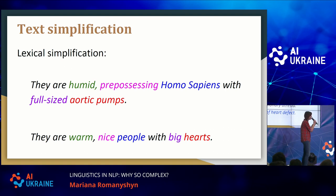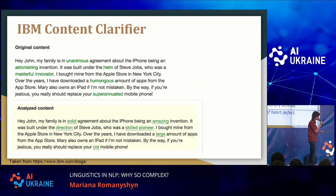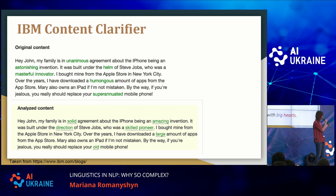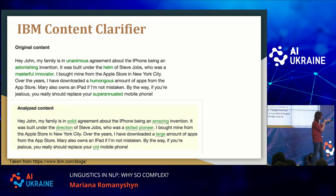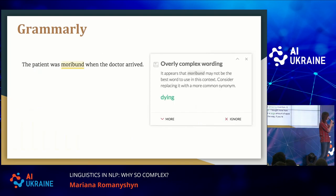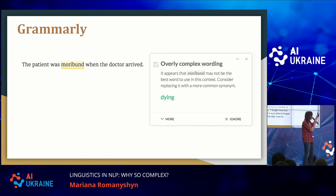You won't find many demos on the web of text simplification because it is still an unsolved task. If we look at lexical simplification specifically — rephrasing complex words to simpler words — you will find, for example, IBM Content Clarifier. In the demo example, you can see that the word "humongous" is replaced with "large," and the word "superannuated," which most people won't know, is replaced with "old," and so on.